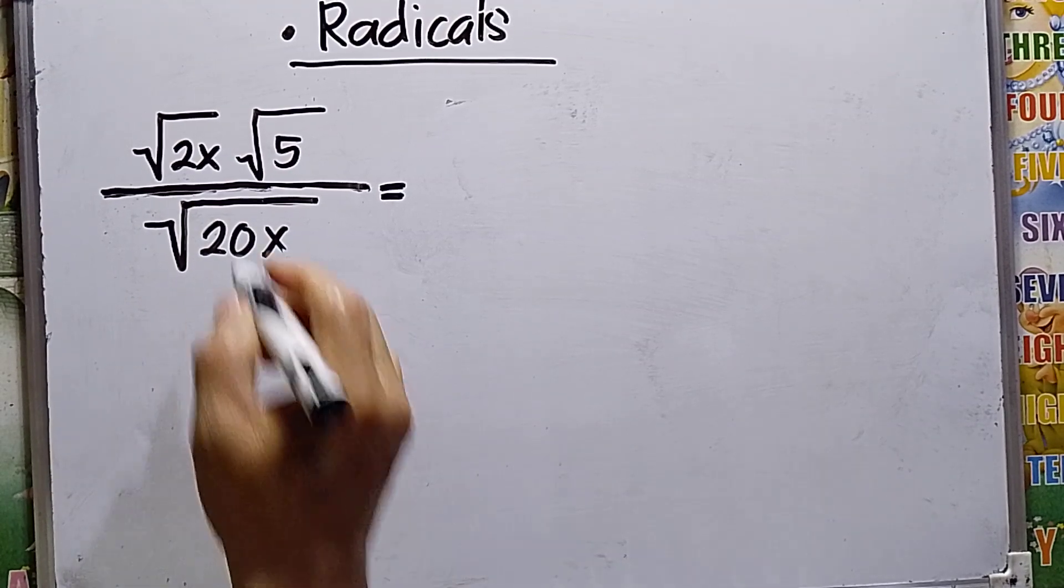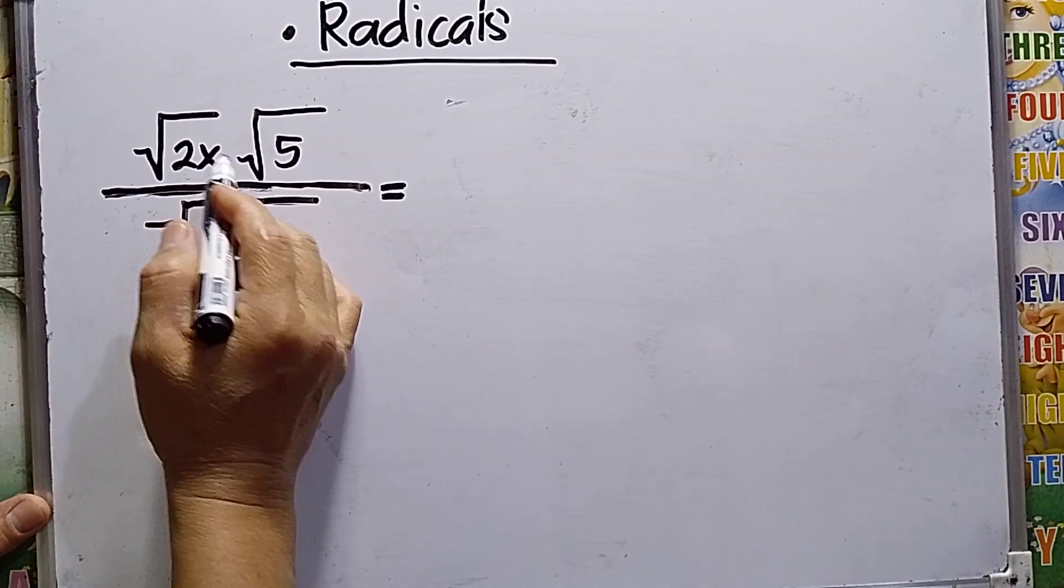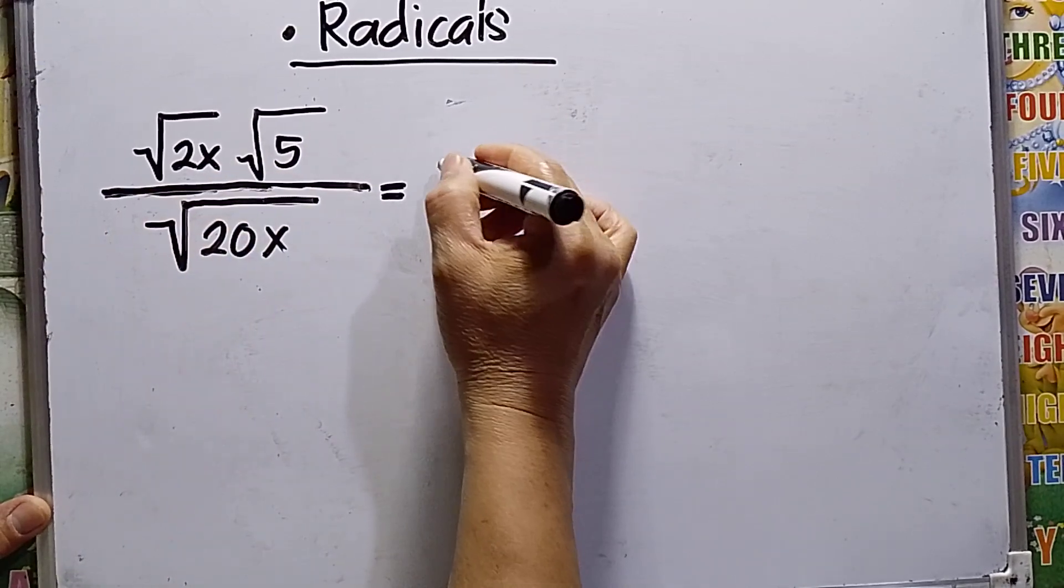I can multiply these because they have the same power, square root and square root. So this will be square root of 10x over square root of 20x.